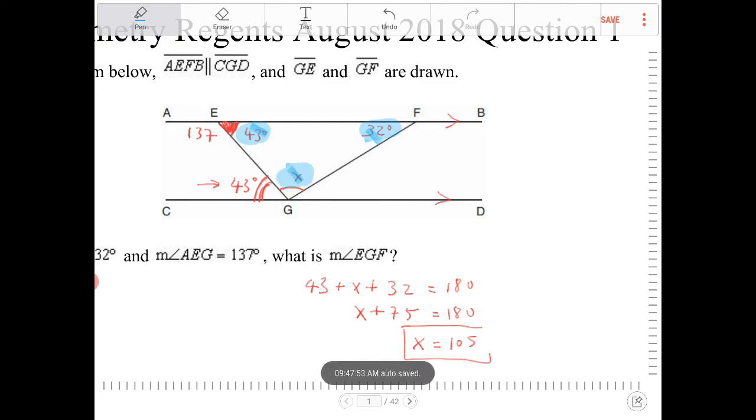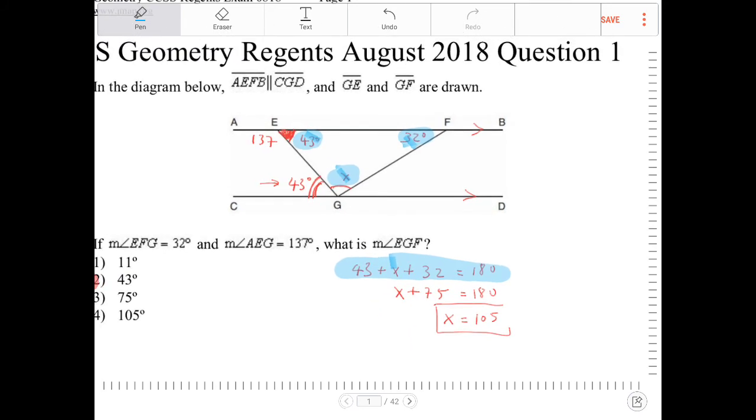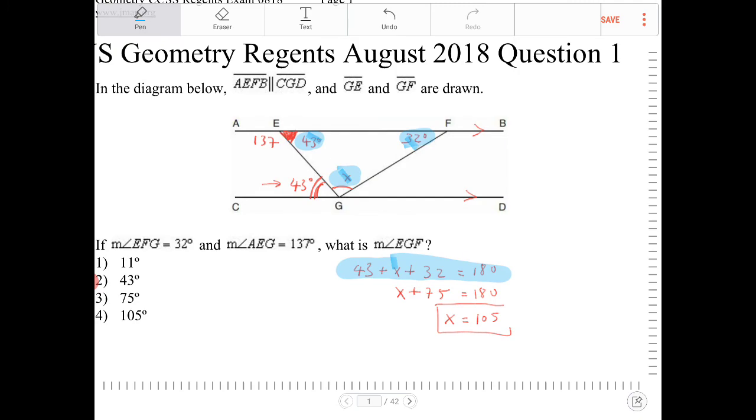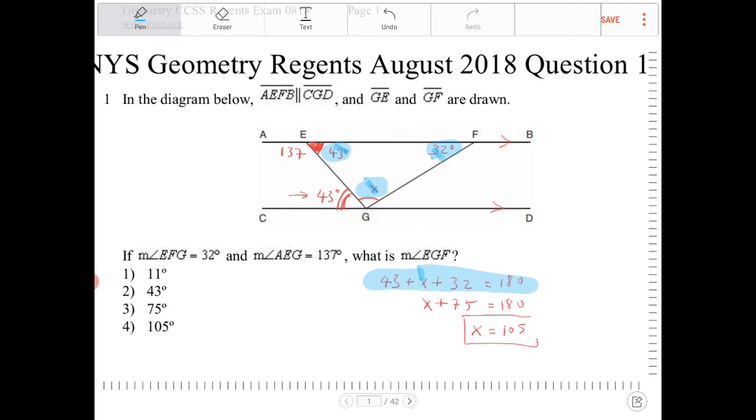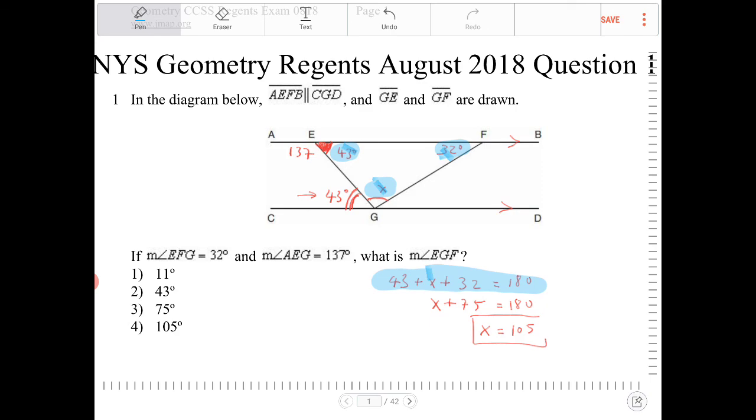So you can see 43 plus X plus 32 is equal to 180 is also listed out, but for a different reason. Here, what I'm highlighting in blue inside of the triangle, I'm recognizing that the sum of the angles inside of a triangle is equal to 180. But again, the approach, it's a different approach. We end up doing very similar computational work, though. 105, that's option 4.